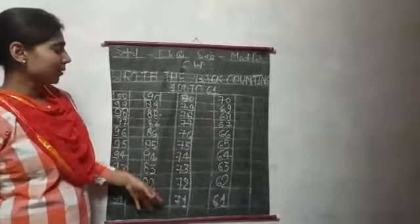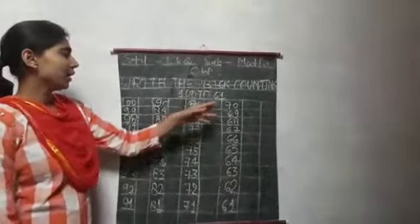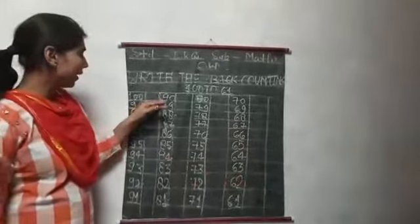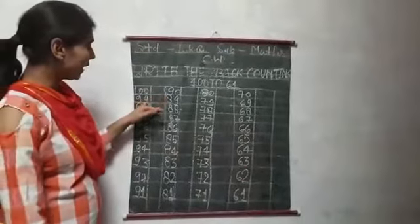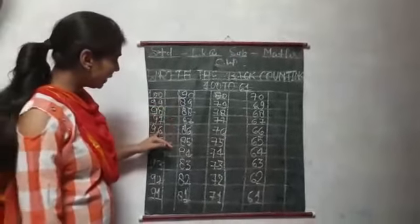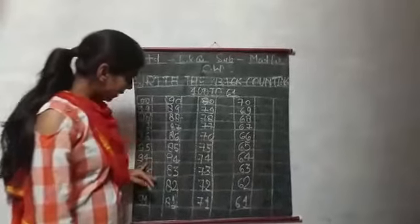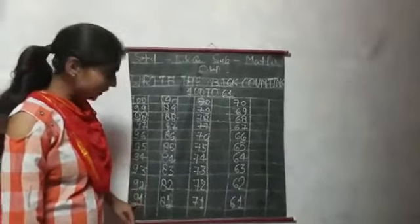You will do backcounting in the math quality column. Like 100, 99, 98, 97, 96, 95, 94, 93, 92, 91.